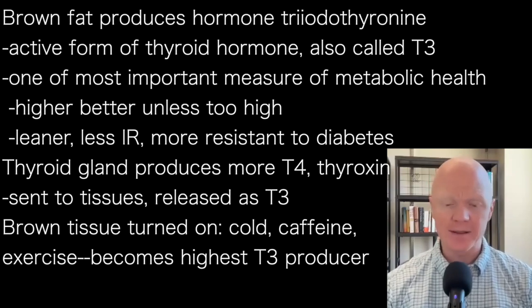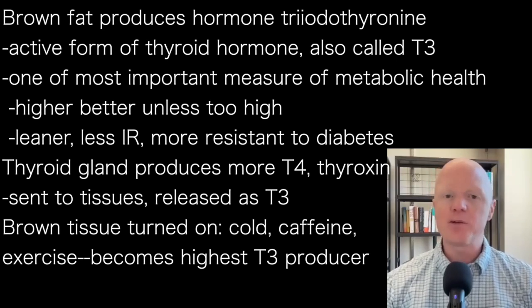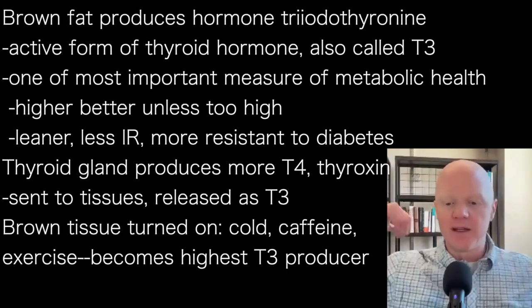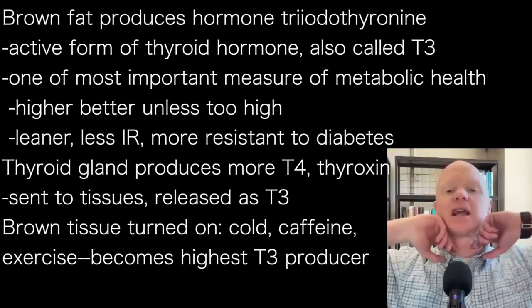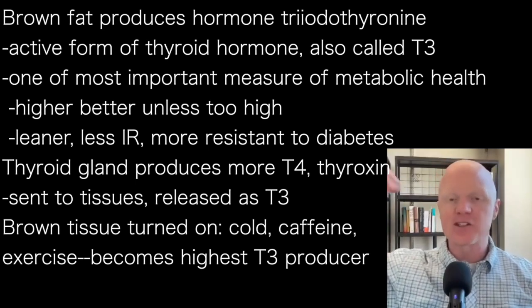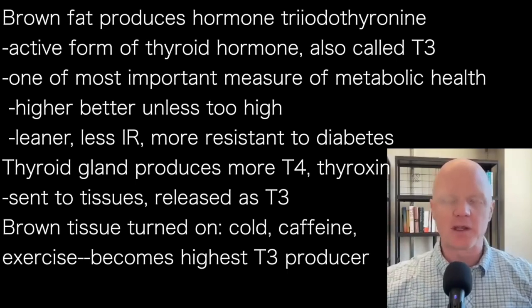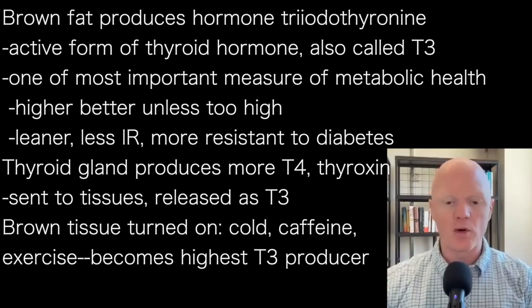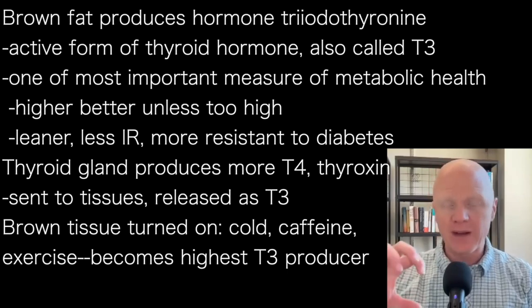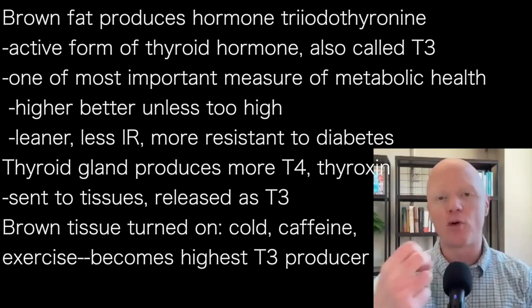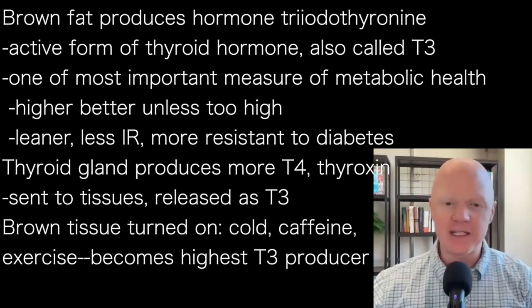The thyroid gland produces a relatively modest amount of T3. It produces relatively more of the inactive form called thyroxin, which is T4. Then T4 will have one of the iodine molecules stripped off as it moves into various tissues throughout the body. The thyroid gland releases T4, tissues throughout the body pull in T4 and release it as T3. The whole body is helping create T3. And when brown adipose tissue is turned on — like through cold therapy, a little caffeine, or exercise — it becomes the highest producer of T3, pulling in more T4 and releasing more T3 than any other tissue.